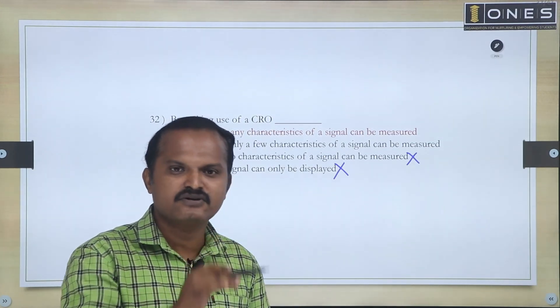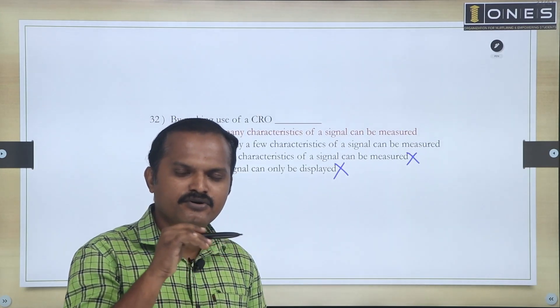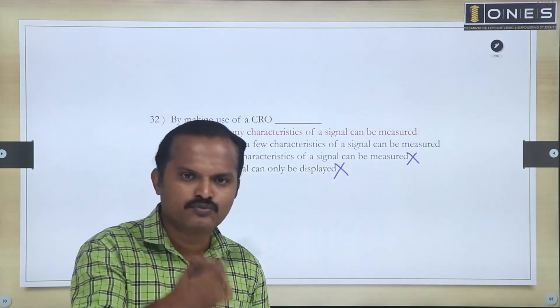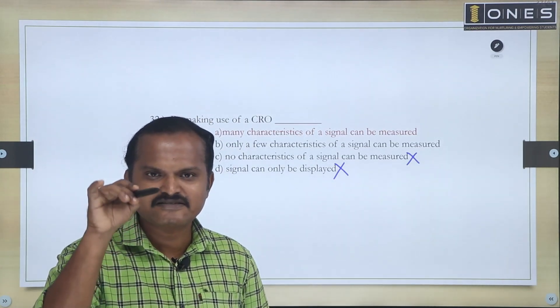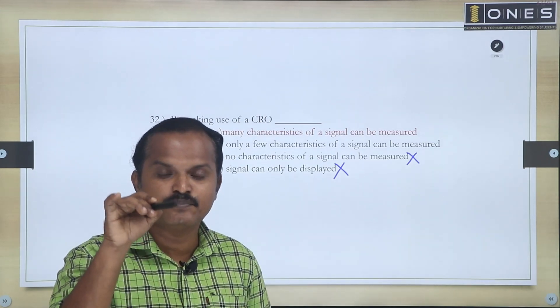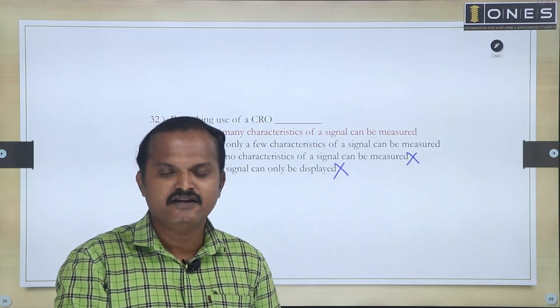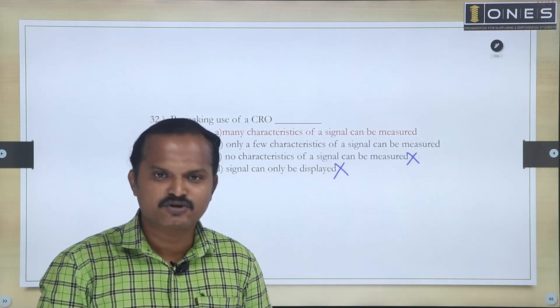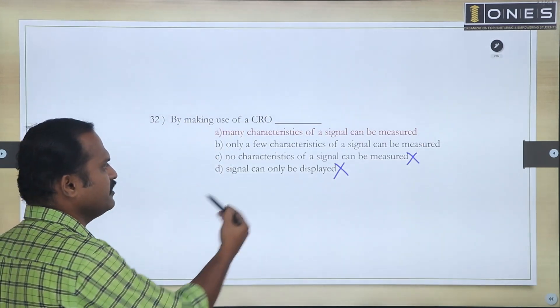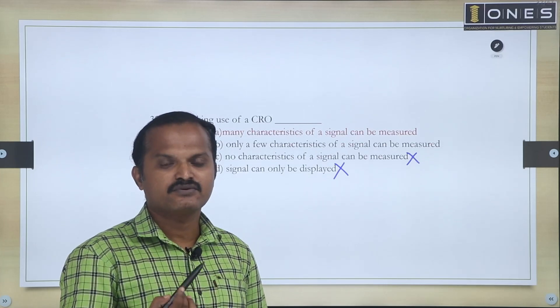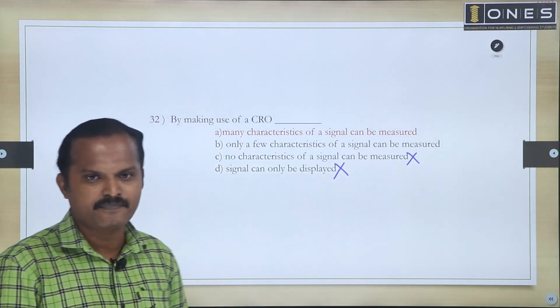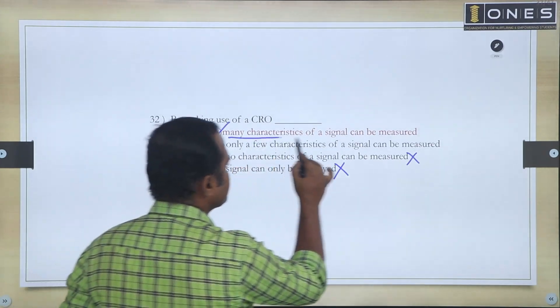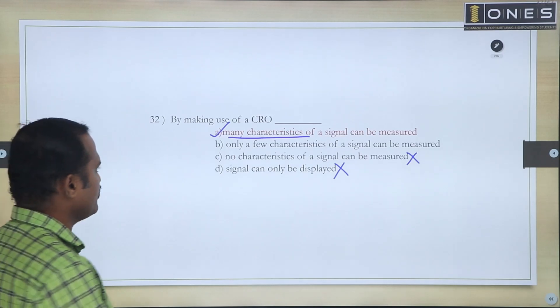Suppose you are taking two signals, one on one channel, one voltage on another channel input. For example, output and input. Suppose you are analyzing the transfer characteristic, X-Y plot, one button press, you are able to plot Y direction output measure, X direction input measure. So one of the characteristics we can measure using cathode ray oscilloscope. So the answer is: many characteristics of a signal can be measured.